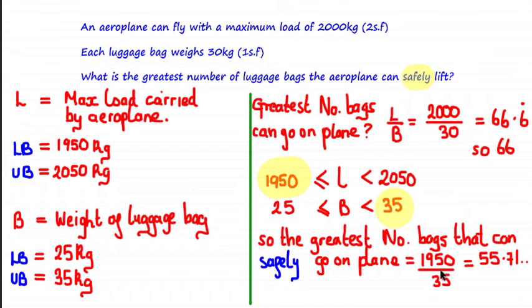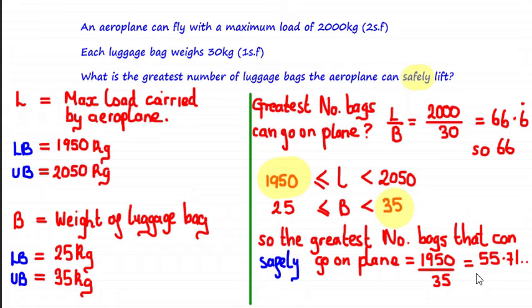So the greatest number of bags that can safely go on the plane is equal to 1,950 divided by 35, which equals 55.71 and so on. We can't leave it as a decimal since we're looking for the greatest number of bags, and as we are ensuring we're flying safely, we round this value down to the nearest whole number — certainly not up. So the answer is 55.